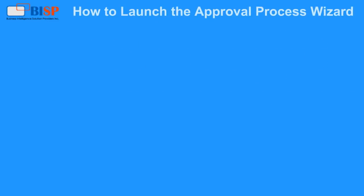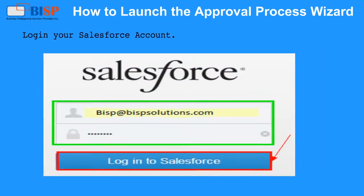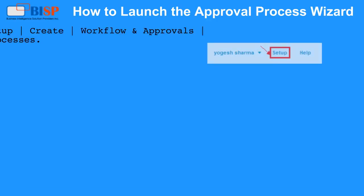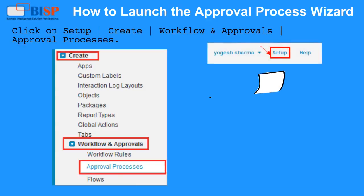How to launch the Approval Process Wizard. Log in to your Salesforce account, then click on Setup. Click on Create, then click on Workflow and Approvals and select Approval Processes.